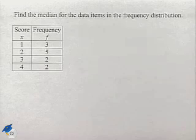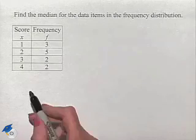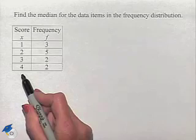Now let's look at a frequency distribution where we're asked to find the median. In the first column, we have our scores: 1, 2, 3, 4.